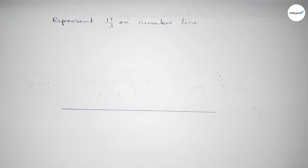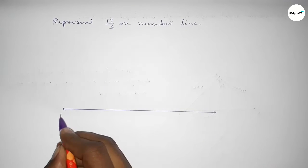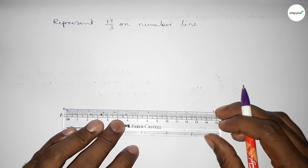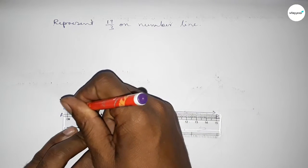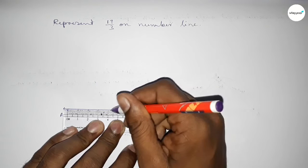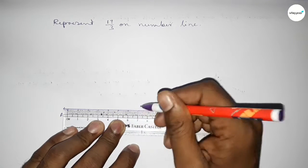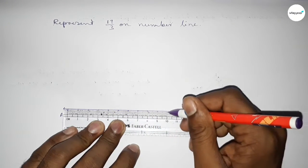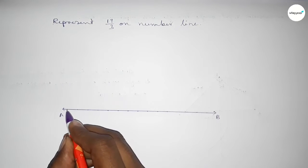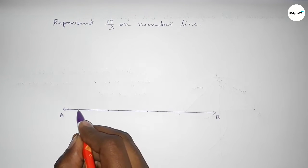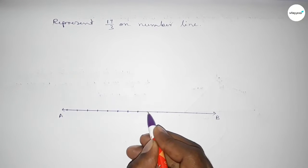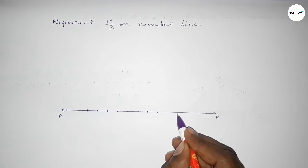First of all, we have to draw here the number line. So drawing here a line, taking on both sides an arrow mark, and taking here points A and B. Next we have to mark the numbers on the line by using a scale, by this way.